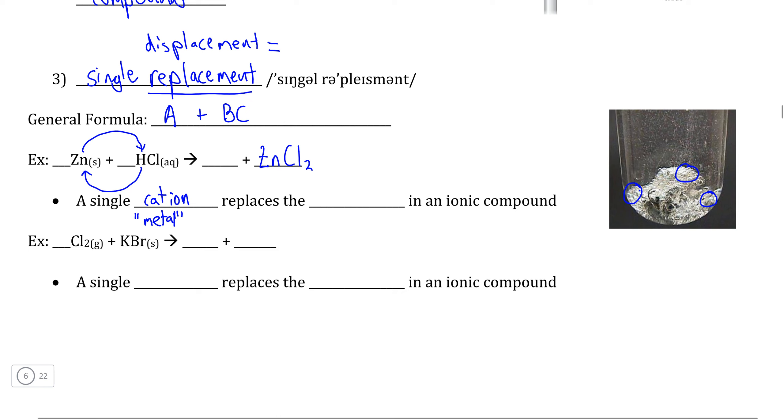So the single metal or cation in element form replaces the cation, which again, we're going to put in quotes as a metal here, within the ionic compound in order to produce a different ionic compound here. And of course, the bubbles that we generate here are hydrogen gas, which is our element.